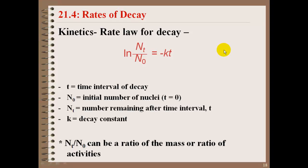Our rates of decay, we did this during kinetics. So this is not new. This is a review. Kinetics rate of decay. We have our natural log of N_t over N_0, which equals negative K times t. T is your time interval of decay. N sub 0 is our initial number of nuclei. N sub t is the number remaining after a time interval. And K is our decay constant.